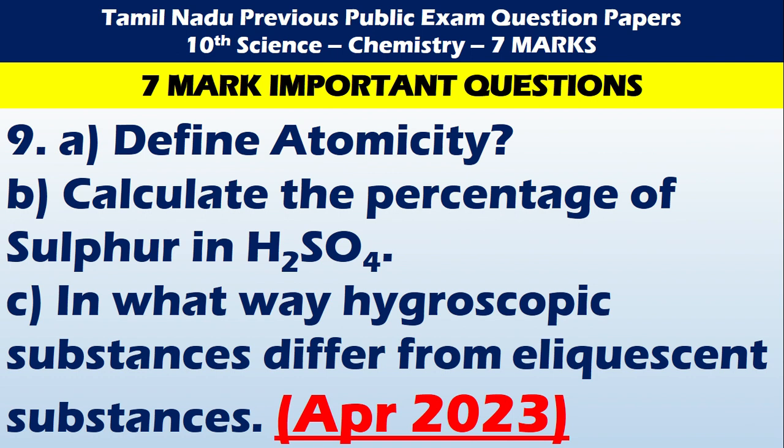Question 9: define atomicity — again, number of atoms present in the molecules is called atomicity. And calculate the percentage of sulfur in H2SO4. Sulfur contributes a specific percentage — this problem is covered in the video, and you can go through that answer to get the benefit.